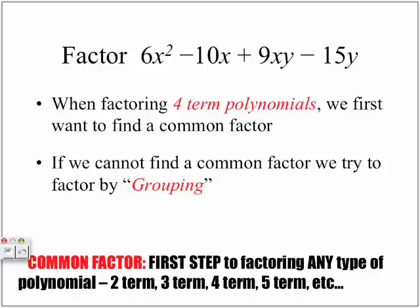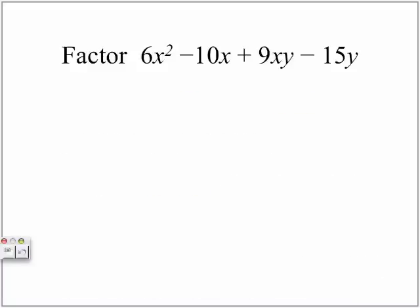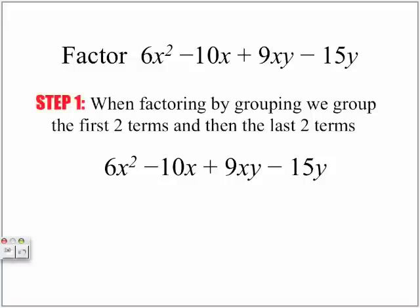If we cannot find a common factor, we try to factor by grouping. We use factoring by grouping whenever we have a four-term polynomial. So let's factor the following four-term polynomial. Step one when factoring by grouping: we group the first two terms and then the last two terms.